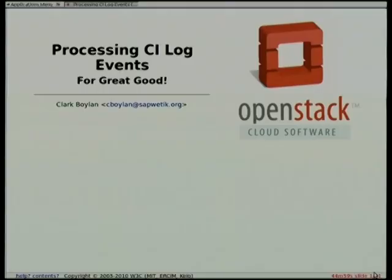My name is Clark Boylan. I work with Jim and Anita and Liz and some other folks to help run the OpenStack CI and developer automation infrastructure. Basically what we do is make sure that the developers of OpenStack can do their job and, every six months, cut a new release of OpenStack and build your clouds.